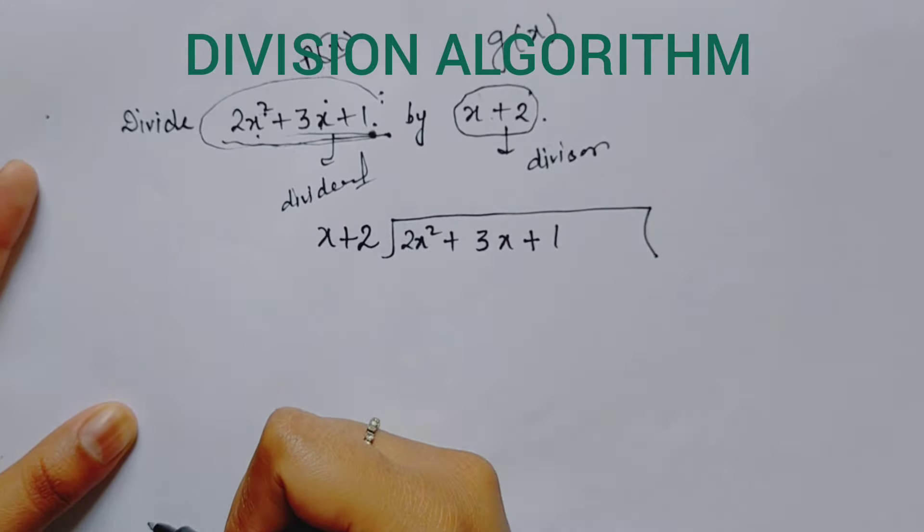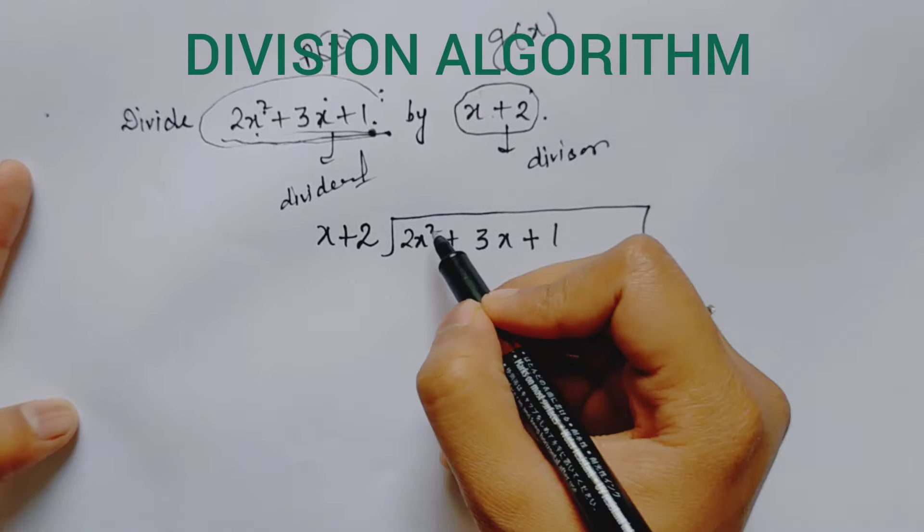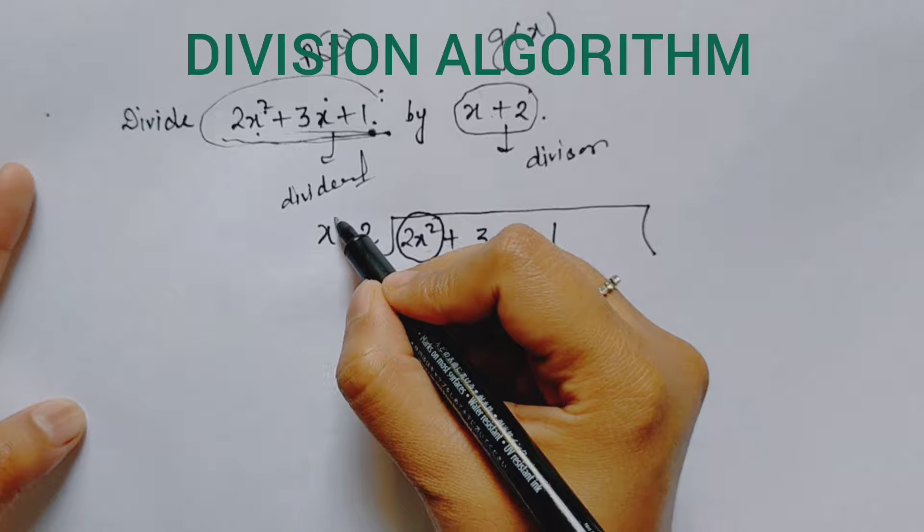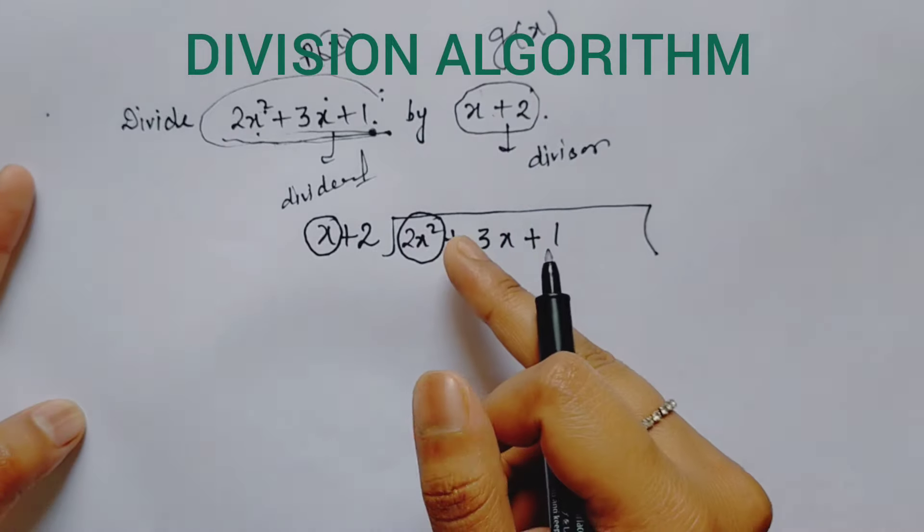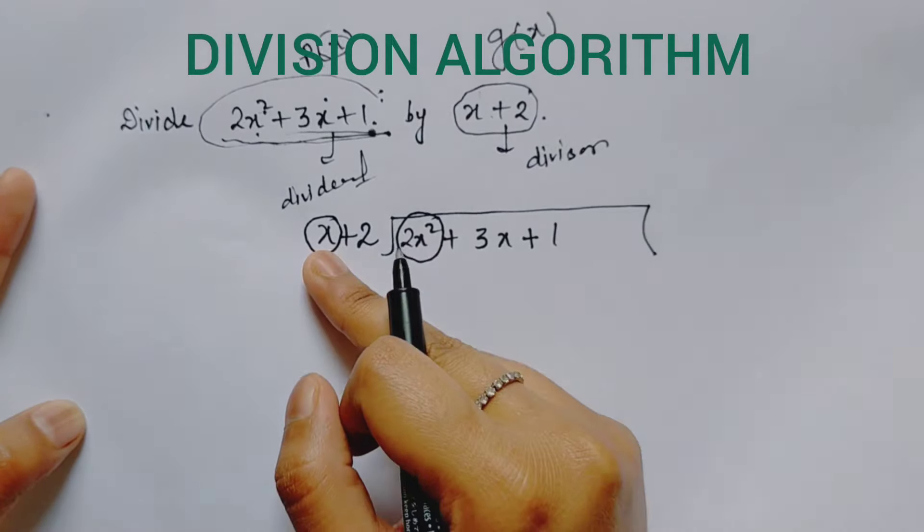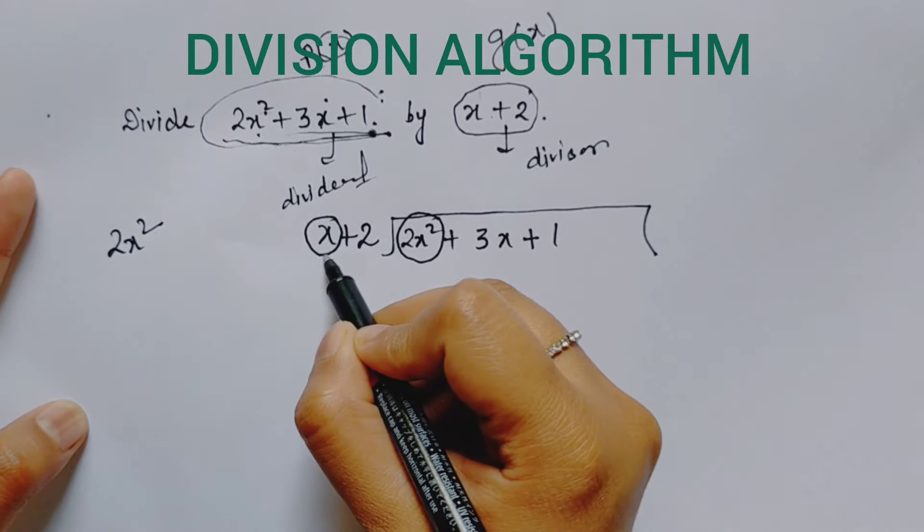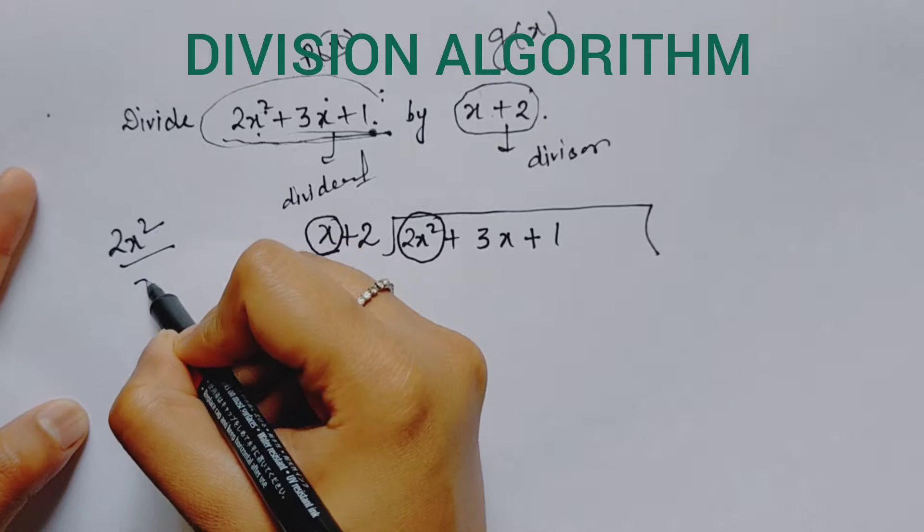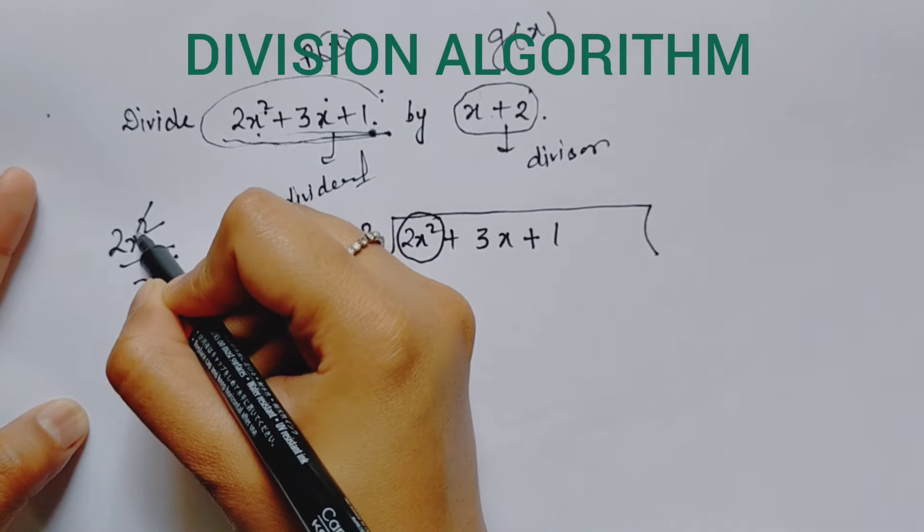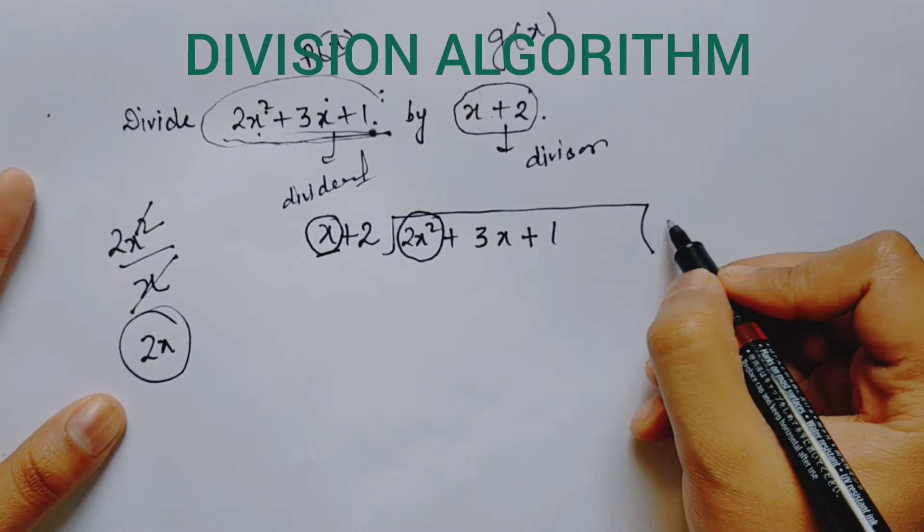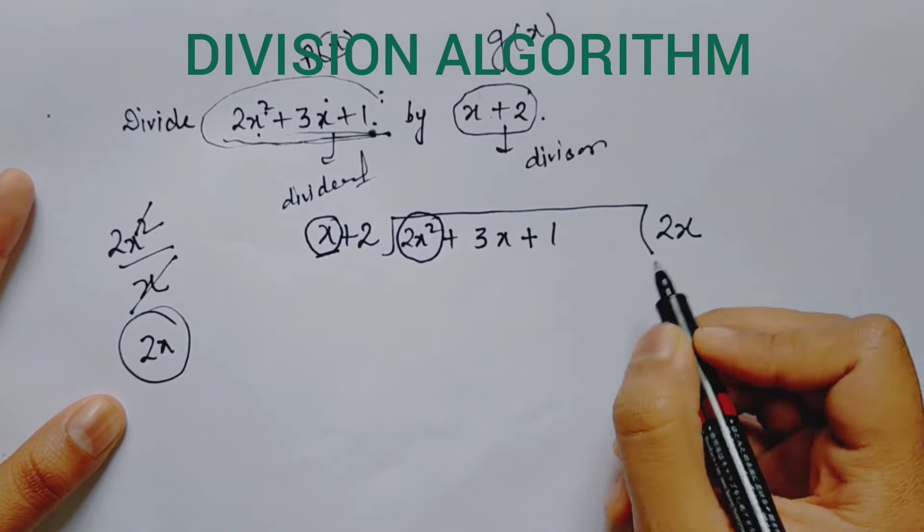We keep the dividend inside this bracket. The divisor is always kept outside: x plus 2. Now first we see the first term of the dividend and the first term of the divisor. In rough, we divide this term by this term. We divide the first term of the dividend by the first term of the divisor.